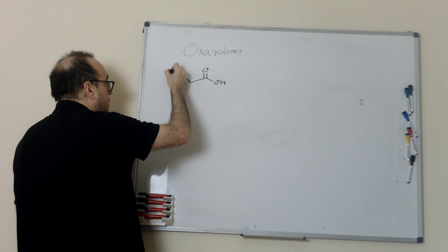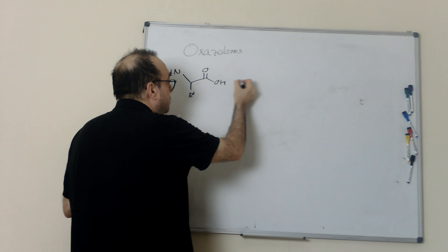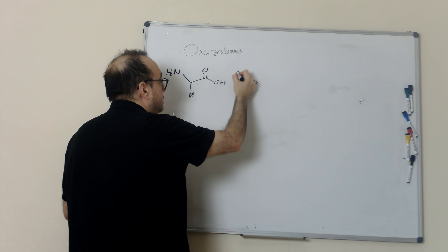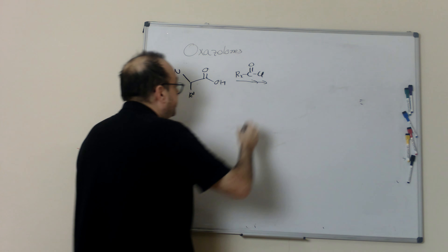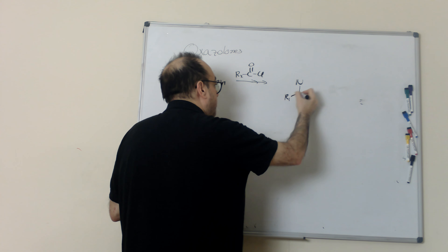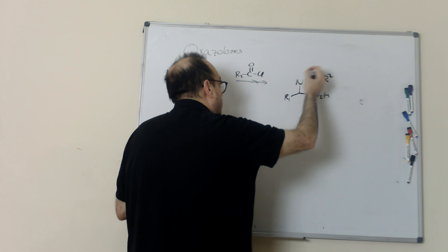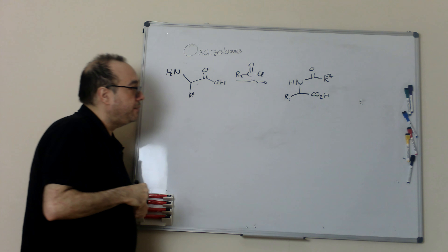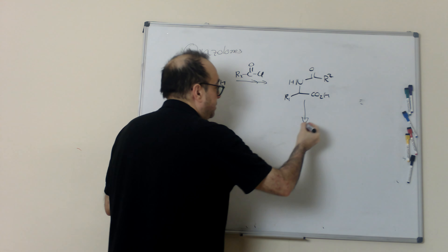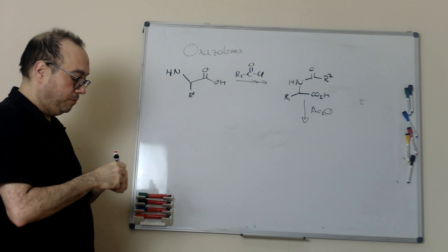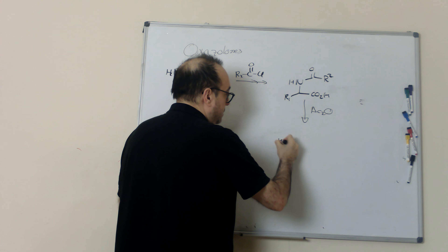We have here an amino acid. The first step is always to form an amide. We use an acid chloride, for example, and we form the amide. Once we have the amide, what we will do is cyclize. There are several reactions that lead to Oxazolones, but the most common is to add acetic anhydride. What happens when we add acetic anhydride is that we form a mixed anhydride intermediate.